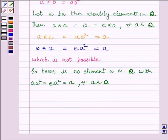So there is no element e in Q with ae squared equals ea squared equals a for every a belonging to Q. Therefore, there exists no identity element for binary operation star.